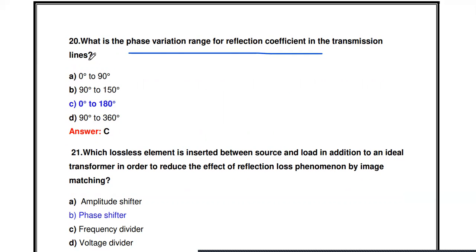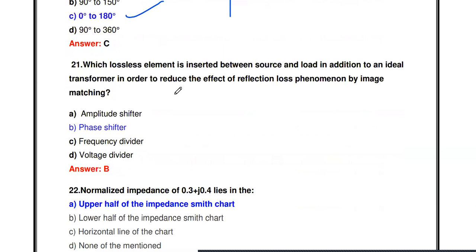Next question: What is the phase variation range of the reflection coefficient in a transmission line? The phase variation of the reflection coefficient varies from 0 to 180 degrees.